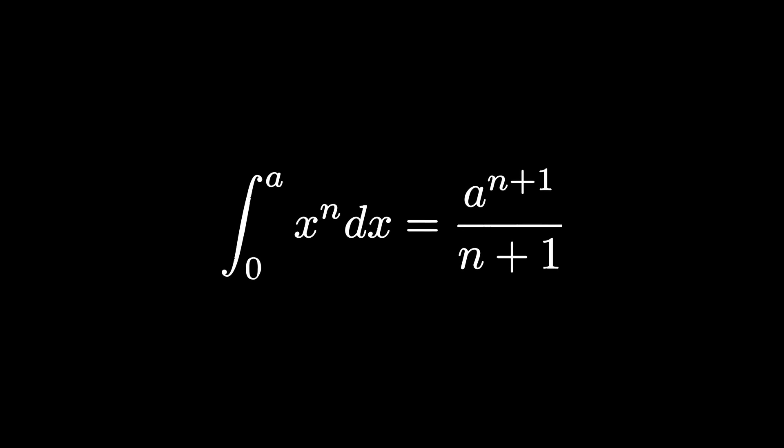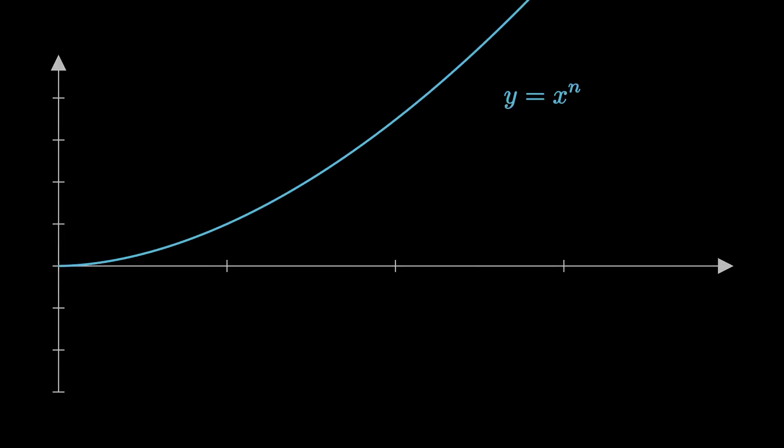Again, I want to stress that this was found before calculus was a thing, before derivatives and integrals and the fundamental theorem of calculus. But this was an amazing discovery. It solves the quadrature problem for any function x to the n. To Fermat's delight, it worked for negative and even rational exponents.